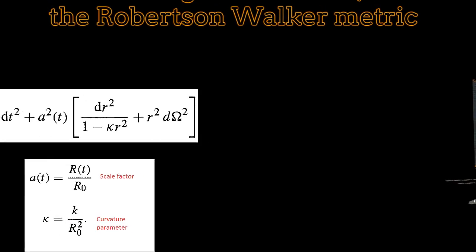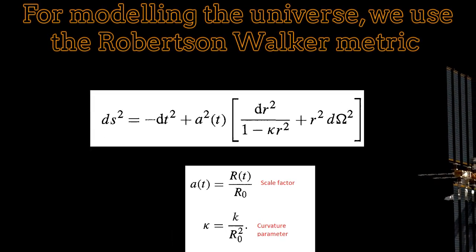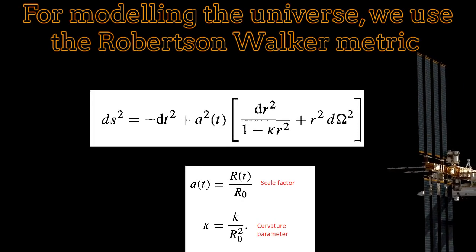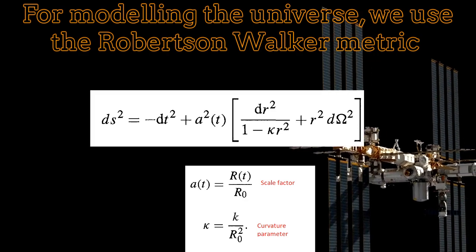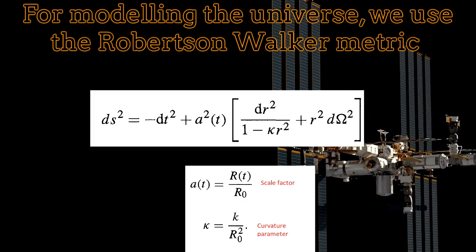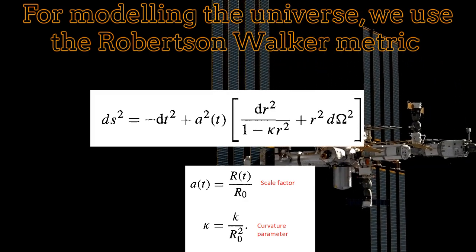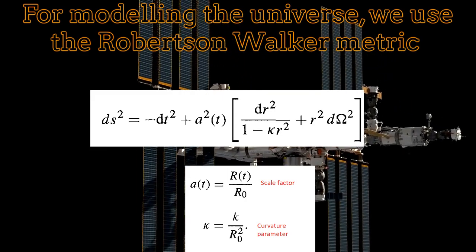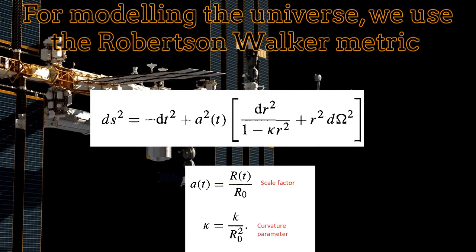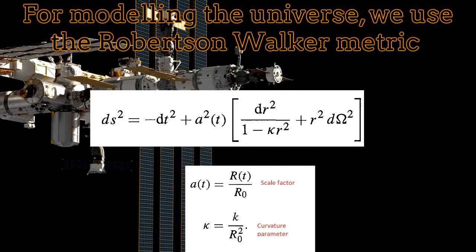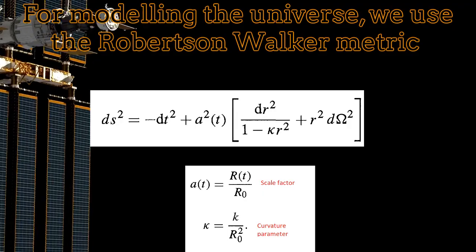The metric to be considered in these situations is the Robertson-Walker metric. This metric contains a scale factor, A, as well as a curvature parameter called kappa. This metric contains the homogeneity and isotropy of the universe at large scale by taking the three spatial dimensions on equal footing.